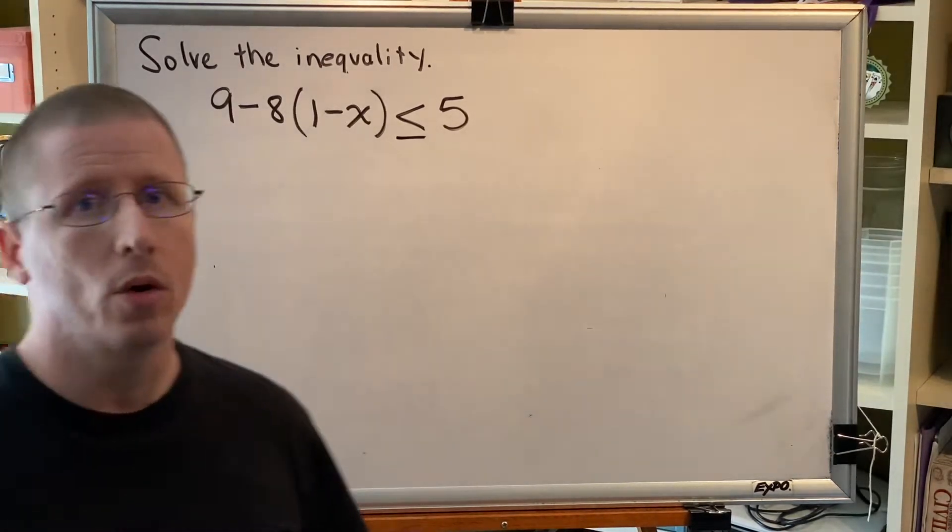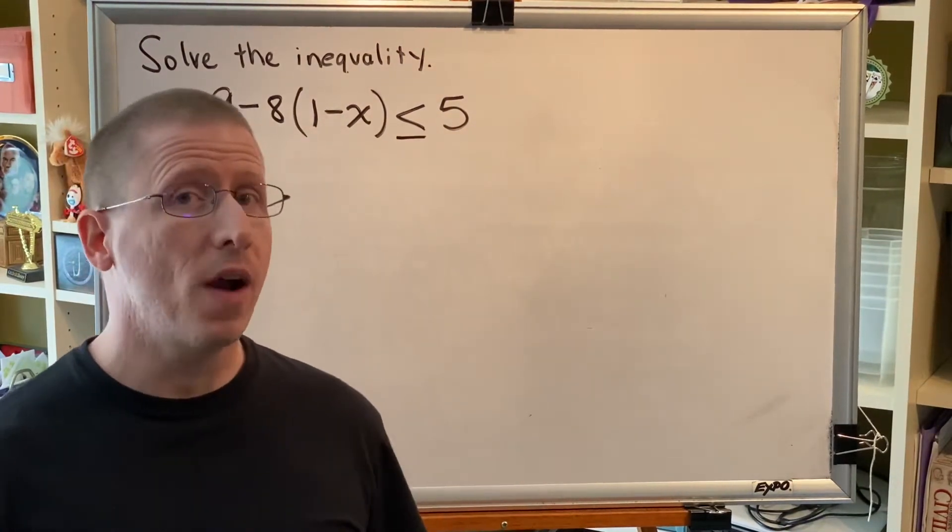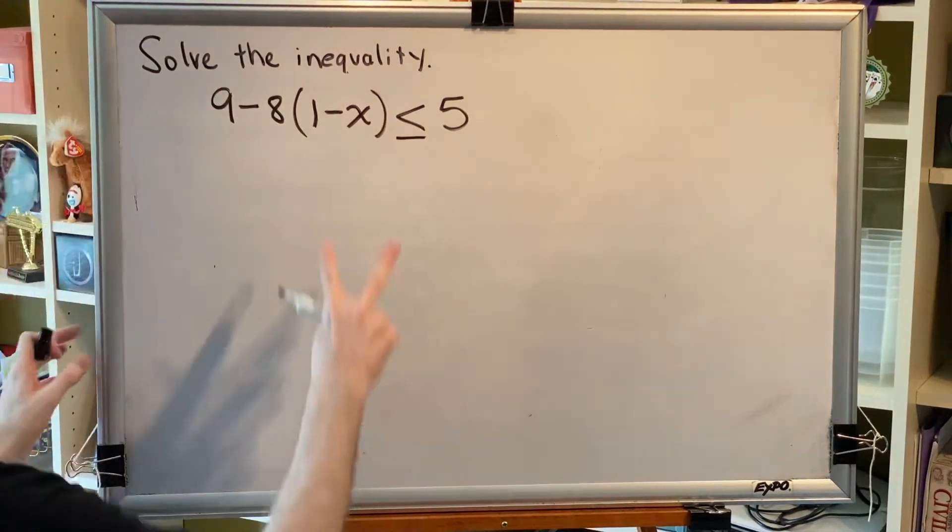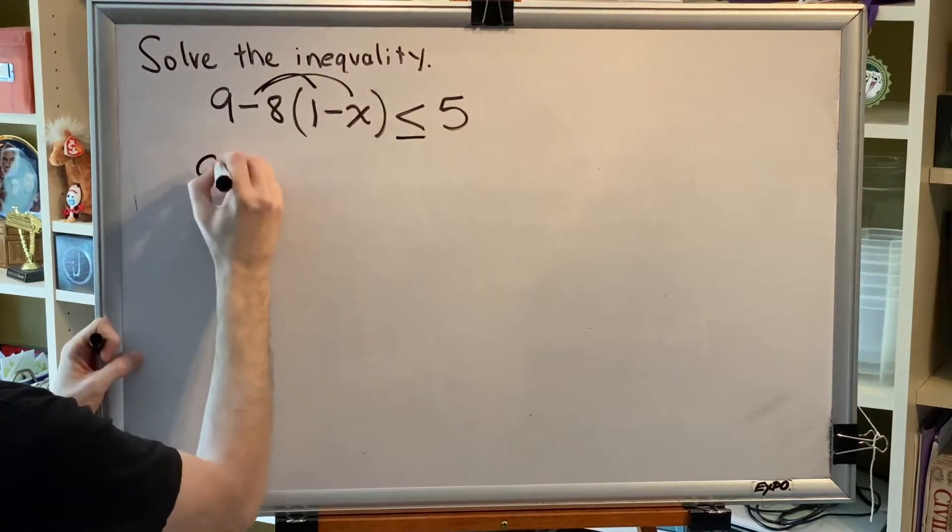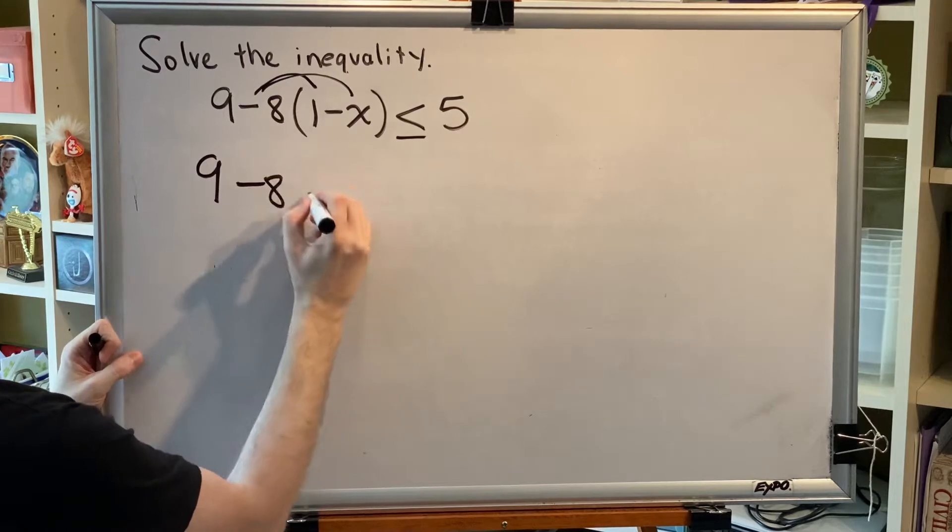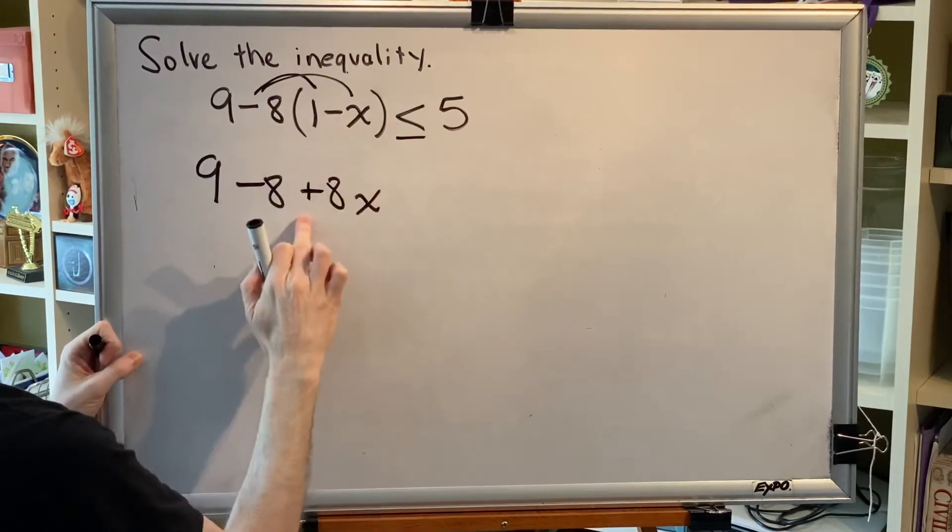We want to get rid of fractions and grouping symbols. We don't have any fractions, but we do have a grouping symbol, these parentheses. So let's distribute this subtract 8. We get 9 subtract 8 plus 8x. It's plus because a negative times a negative is a positive.